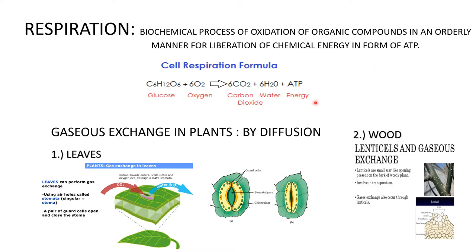Now let's see how gaseous exchange takes place in plants. In plants it takes place by diffusion. Diffusion is the transfer of particles from higher concentration to lower concentration. Oxygen level is high in the atmosphere and hence it gets transferred from the atmosphere into the plant — through leaves and through wood.